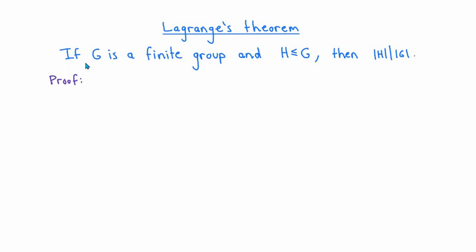We'll prove this theorem in two steps. In the first step, we'll define an equivalence relation on the group G, which gives rise to a partition of G into equivalence classes. And in the second step, we'll show that each of the equivalence classes has cardinality equal to the order of H. That will allow us to easily deduce that the order of H must be a divisor of the order of G.